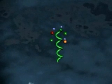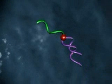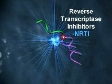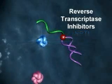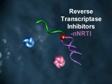Viral RNA is then released from the capsid and the process of transcribing viral RNA to DNA is performed by the viral enzyme reverse transcriptase. Drugs that interfere with this process are called reverse transcriptase inhibitors, or RTIs, and include the nucleoside and non-nucleoside RTIs.